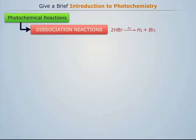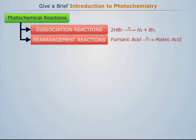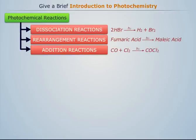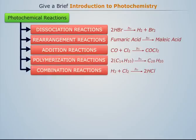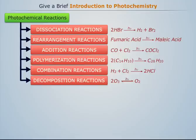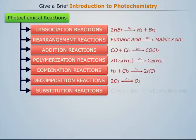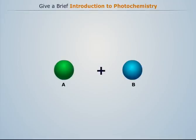Some typical photochemical reactions include dissociation reactions, rearrangement reactions, addition reactions, polymerization reactions, combination reactions, decomposition reactions, and substitution reactions.